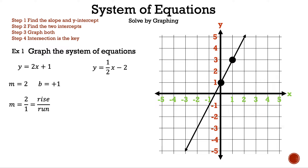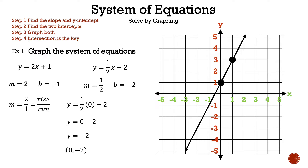Now let's graph the second equation, y is equal to 1 half x minus 2. The slope is 1 half and the y-intercept is negative 2. This time we're going to find two points to graph instead of using the slope and y-intercept. Let's substitute 0 for x. So we have y is equal to 1 half times 0 minus 2. 1 half times 0 is 0, and 0 minus 2 is negative 2. So y is equal to negative 2, which means the point is 0, negative 2. Now let's plot the point on the graph.